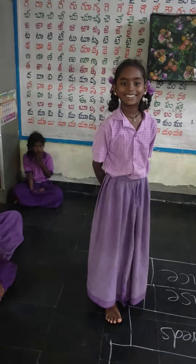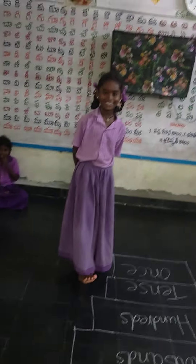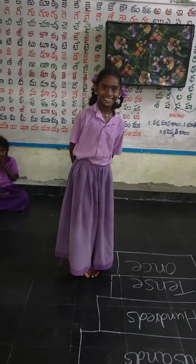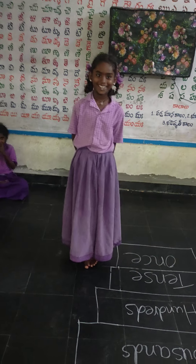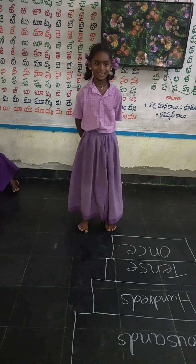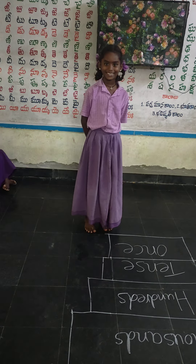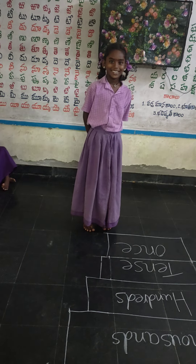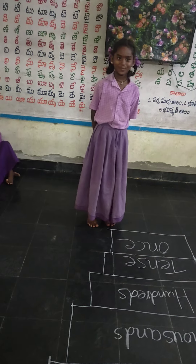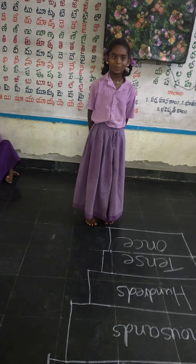How many lakhs? Six lakhs. Okay, you got six lakhs. What did you do? Speak out. What did you do?